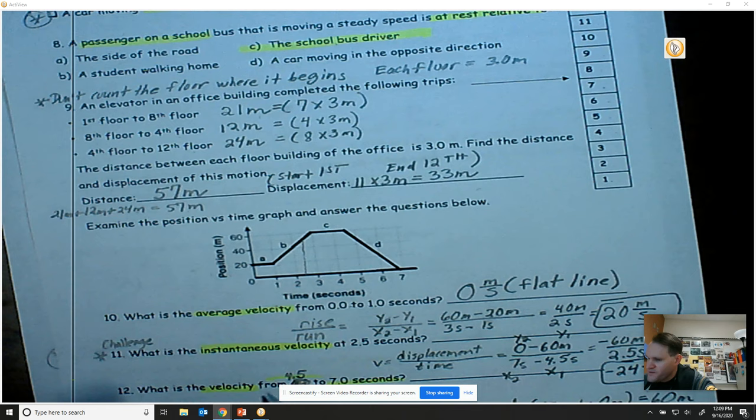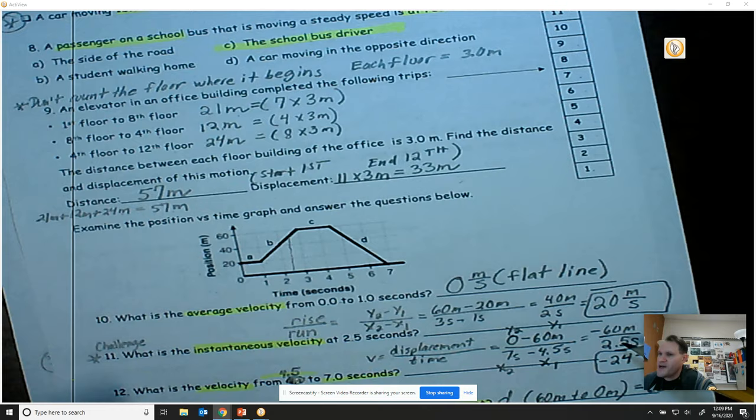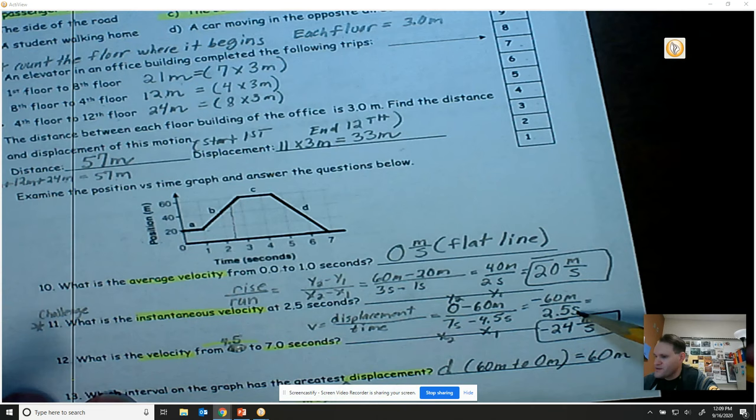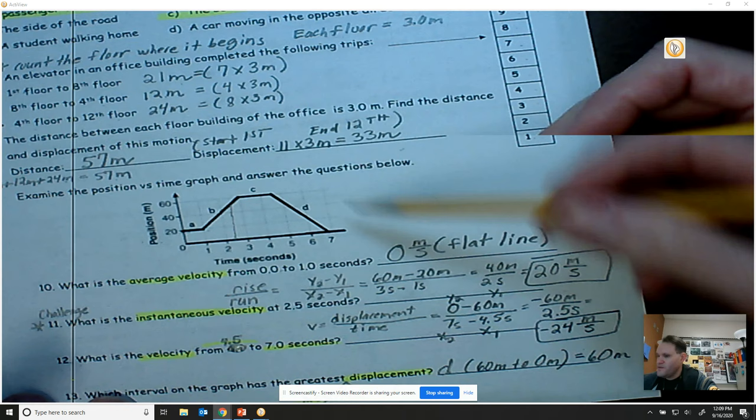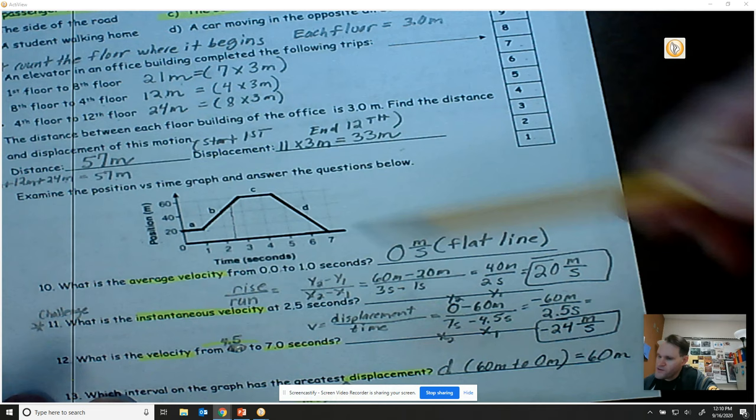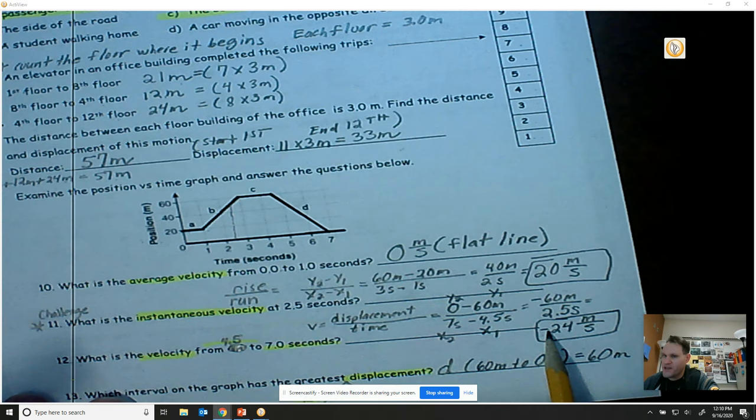Number 12, what is the velocity from 4.5 to 7 seconds? So again, you want to use the slope formula, y2 minus y1 divided by x2 minus x1. And so you'll end up with 0 minus 60 meters, which is negative 60 meters, and 7 seconds minus 4.5 seconds, which will be 2.5 seconds. So you're going to divide negative 60 meters divided by 2.5 seconds to end up with a velocity of negative 24 meters per second. Notice that this is a negative slope from 4.5 to 7 seconds. So this velocity is negative. That's why you have a negative sign. That's telling you you have a negative slope. Negative slope means negative direction.